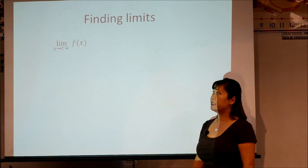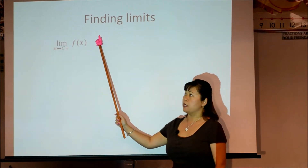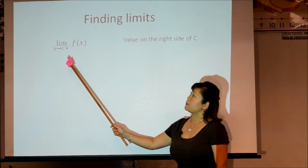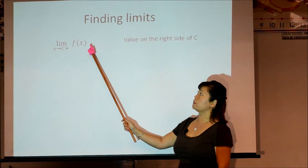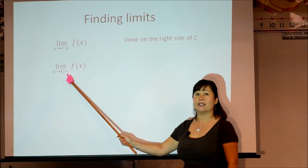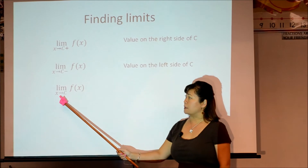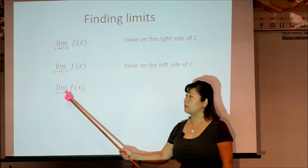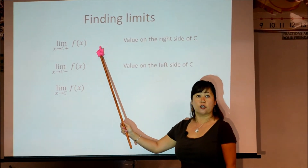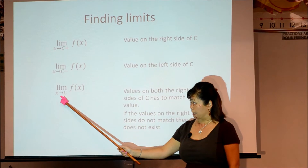When finding limits, we find the limit as X approaches a number. A plus sign means we're looking from the right-hand side of C — whatever Y value corresponds to those X values on the right. The opposite is the limit as X approaches C from the negative, meaning the left-hand side. If there is no plus or minus, you read the Y values from both sides. If the Y values match, the limit equals that value. If they don't match, the limit does not exist at that point C.